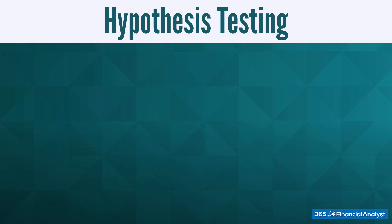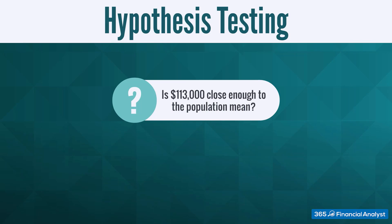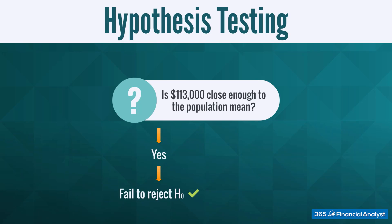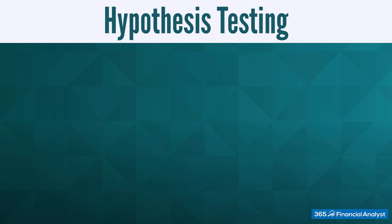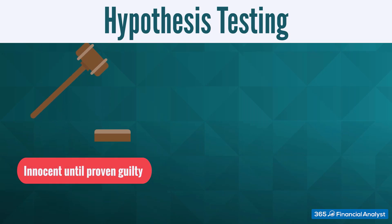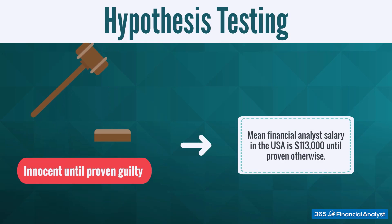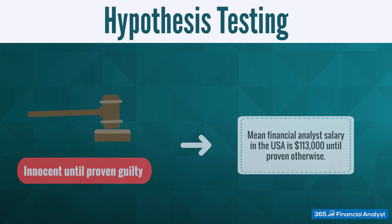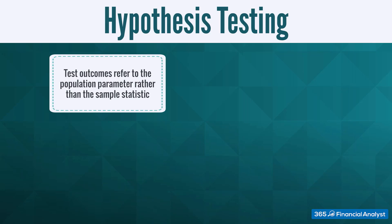You would want to check if $113,000 is close enough to the population mean. If this is true, you would accept the null hypothesis; otherwise, you would reject it. The concept of the null hypothesis is similar to the principle of innocent until proven guilty. It is important to note that the test outcomes refer to the population parameter rather than the sample statistic, so the result we obtain is for the population.